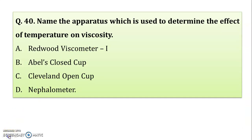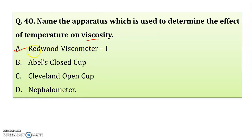Name the apparatus used to determine the effect of temperature on viscosity — Redwood viscometer 1, Abel's close cup, Cleveland open cup, or nephalonmeter? This question is from practical. To determine the temperature effect on viscosity, Option A, Redwood viscometer 1 is used.